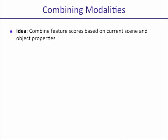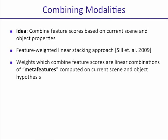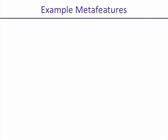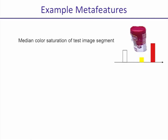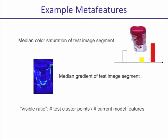The idea is that we want to combine feature scores based on the current scene and object properties. We adopt the feature-weighted linear stacking approach of Sill et al. Here, weights which combine feature scores are linear combinations of meta-features computed on the current scene and object hypothesis. One meta-feature might be the median color saturation of a test image segment, giving us some idea of how reliable our color features will be. Another meta-feature might be the median gradient of the test image segment, which tells us how much texture there is. One other meta-feature might be a measure of how occluded the object is, since this tells us about how reliable the shape features will be.